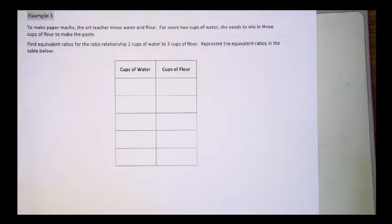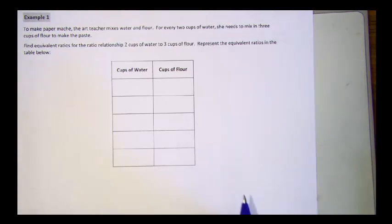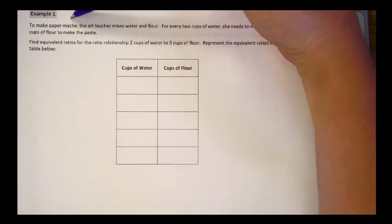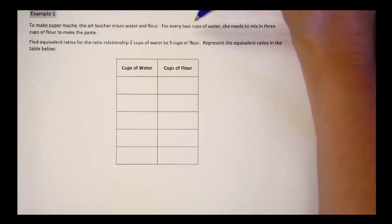In this example, we're going to use a table to show our equivalent ratios. In this problem, an art teacher is using water and flour to make paper mache. Paper mache is what we use to make piñatas or other art projects. They're going to mix flour and water, and for every two cups of water, she needs to mix in three cups of flour to make the paste.